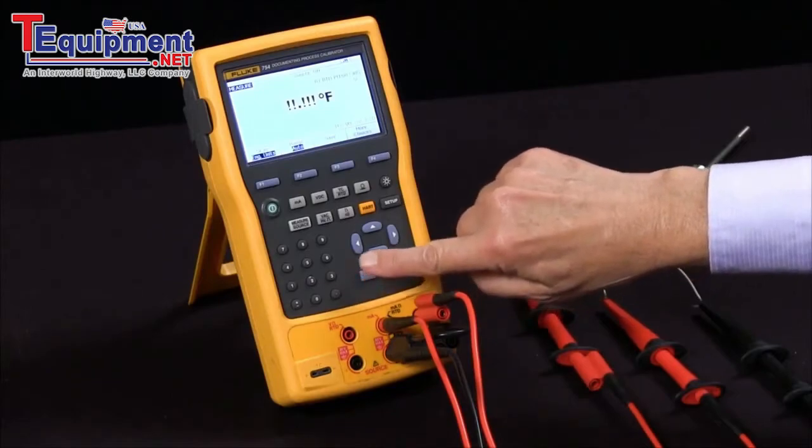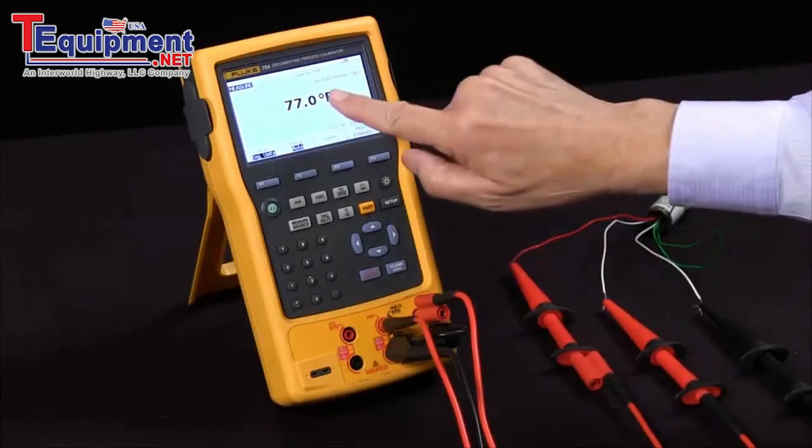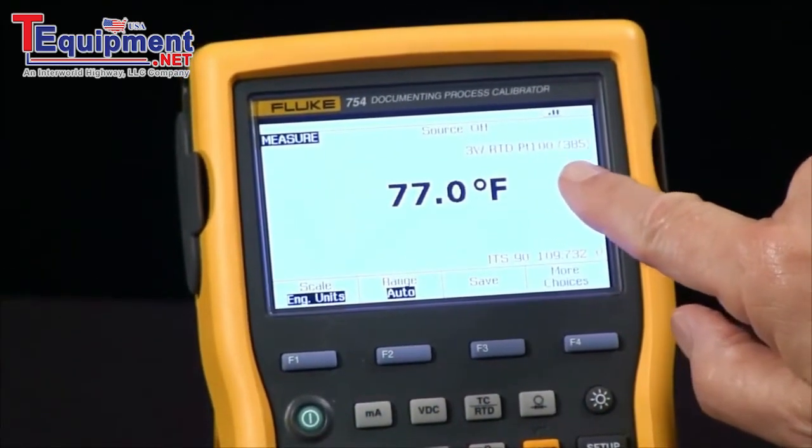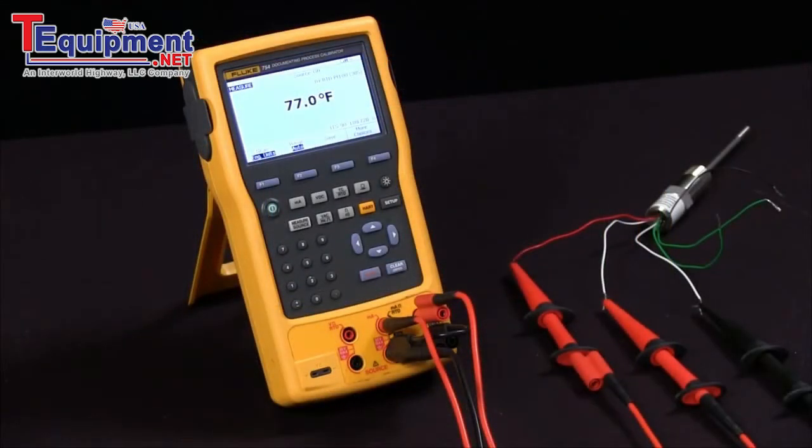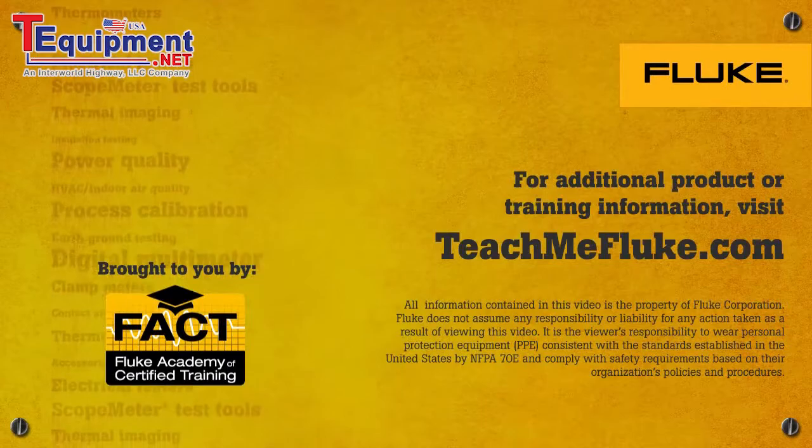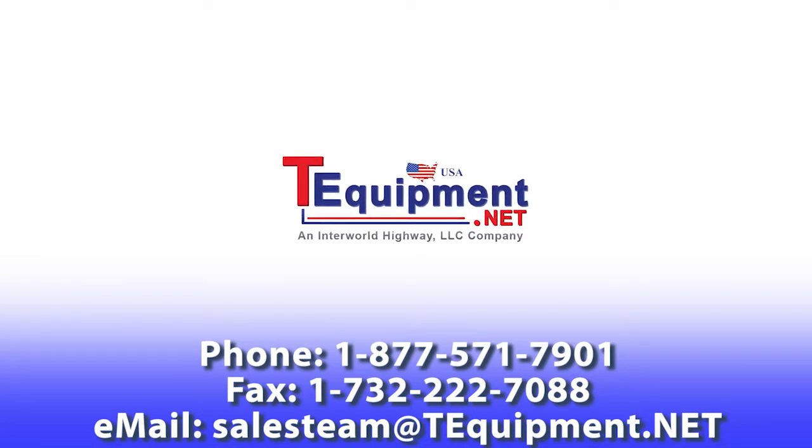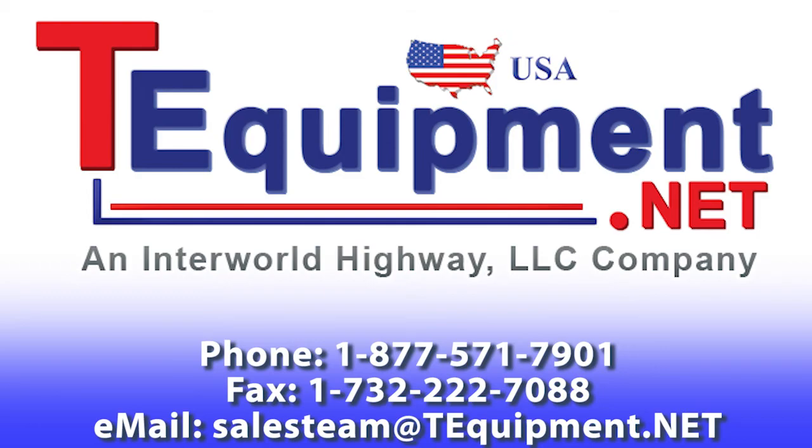I select three wire and it goes to the measure screen. It measures the RTD at room temperature, 77 degrees Fahrenheit. On the screen it shows three wire, RTD, platinum 100 ohm, 385. And that's how we measure an RTD.